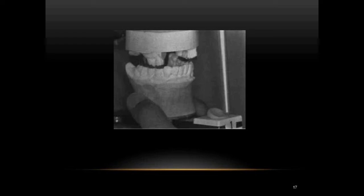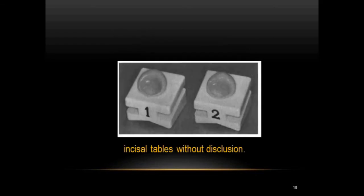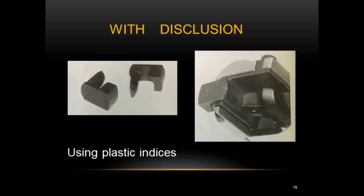We fabricate two incisal guide tables without disclusion: one is used for fabrication of the final restoration, and the other is modified to form the incisal table with disclusion. The first step — incisal table without disclusion — is now complete.